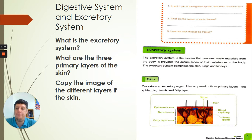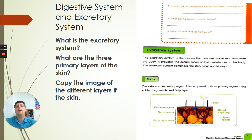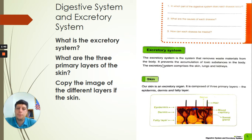If you can open up on page 5 and follow as I read. The excretory system is a system that removes waste materials from the body. It prevents the accumulation of toxic substances in the body. The excretory system comprises the skin, lungs, and kidneys.